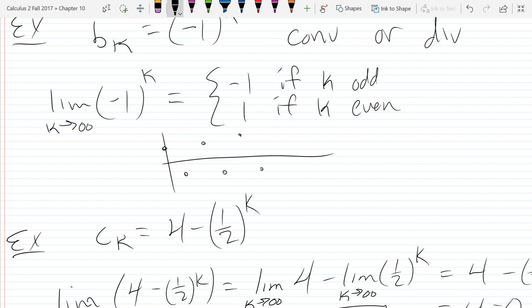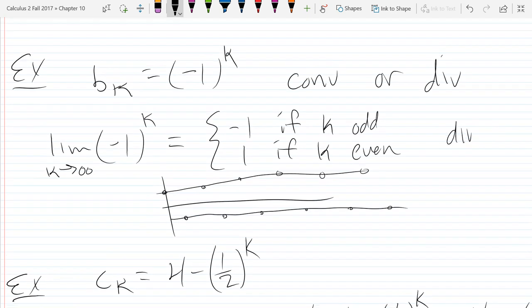But the idea is it never settles down and gets close to a single value. So if you say, hey, let's look at positive one. Well, no matter how far out you go, you have all these negative ones that are far away. Same thing if you try to say negative one is the limit. You have all these positive ones that keep showing up, and they don't get any closer. So this second one does not exist. So it diverges because the limit does not exist.